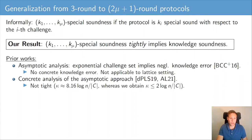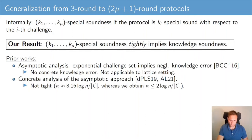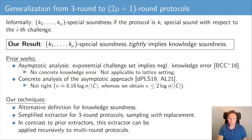Prior works have studied special soundness of multi-round protocols. An asymptotic analysis has been done showing that an exponentially large challenge set implies a negligible knowledge error; however, this result does not give a concrete knowledge error, and moreover is not applicable to the lattice setting where challenge sets are typically not exponentially large. There also exists a concrete analysis of this asymptotic approach; however, the resulting knowledge error is not tight.